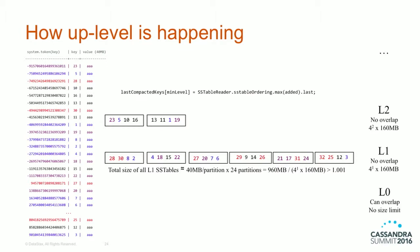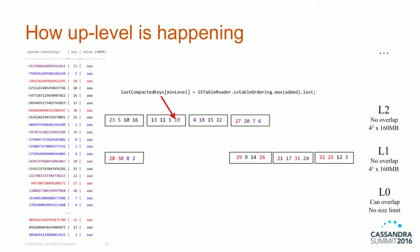LCS tracks something called the last compacted key. In this case, the last compacted key is 19 — the last key in the last SSTable we just up-leveled. We compare 19's token value against the first token value in each SSTable candidate. The SSTable with first key 28 doesn't qualify because its token is less than 19. The second SSTable with first key 4 has a token value greater than 19, so it becomes the compaction candidate and gets up-leveled. Now we have four L2 and four L1 SSTables, and no compaction score exceeds 1.001.